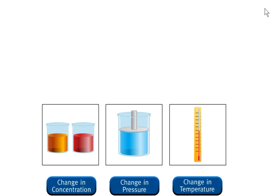The principle states that if an external stress is applied to a system at equilibrium, the system adjusts in such a way that the stress is partially offset. The word stress means a change in concentration, pressure, volume, or temperature.